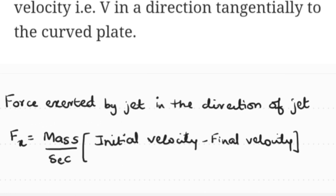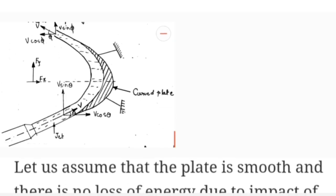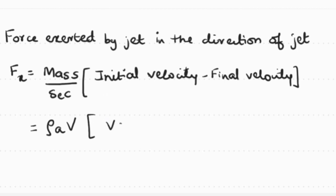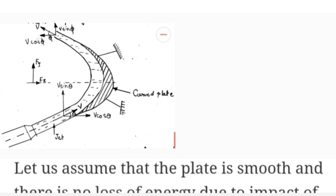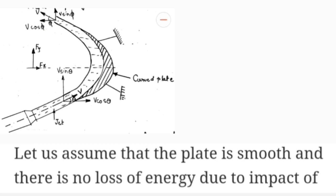The force exerted by the jet in the x-direction is: Fx equals mass per second times (initial velocity minus final velocity). Mass per second is rho times A times V. The initial velocity in the x-direction before hitting the plate is V cos theta. The final velocity in the x-direction after leaving the plate is V cos phi acting opposite to the jet direction, so it is taken as minus V cos phi.